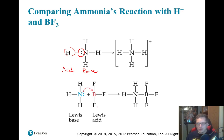Here we've got a Lewis acid-base reaction that is not a Brønsted-Lowry reaction. Ammonia has a lone pair — that extra electron — and it donates it to boron in boron trifluoride, forming a new bond. Boron does not have a lone pair, so now they're sharing it. Ammonia is the Lewis base, boron trifluoride is the Lewis acid.